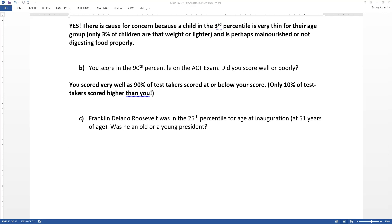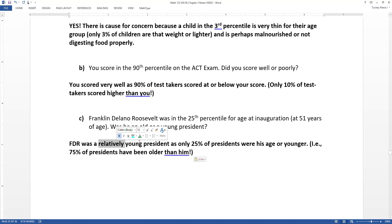The percentile is a measurement of position. And if he's only in the 25th percentile, he was actually pretty young, relatively speaking, for a president, because only 25% of presidents were his age or younger. In other words, 75% of presidents were older than him.